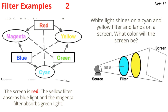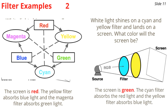In the next example, white light — red, green, and blue — shines on a cyan and yellow filter. The cyan filter absorbs the red light, and the yellow filter absorbs the blue light. Only one color remains after removing red and blue, and that's green. It lands on the screen, and the screen looks green.